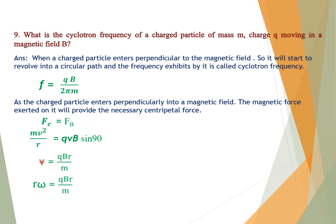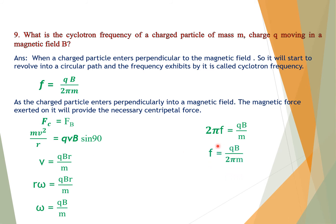We know that V = Rω. Substituting: Rω = QBR/M. Cancelling R gives ω = QB/M. Since ω is angular frequency, ω = 2πf. Therefore the cyclotron frequency f = QB / (2πM).